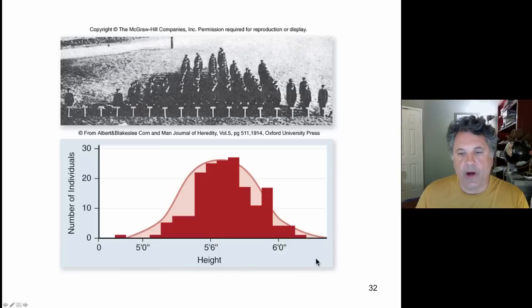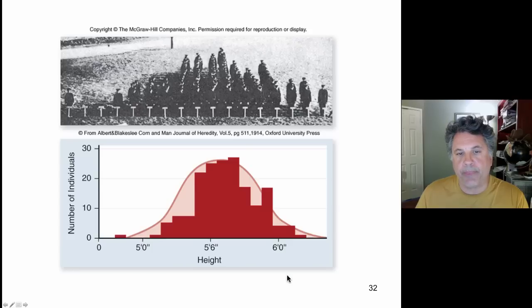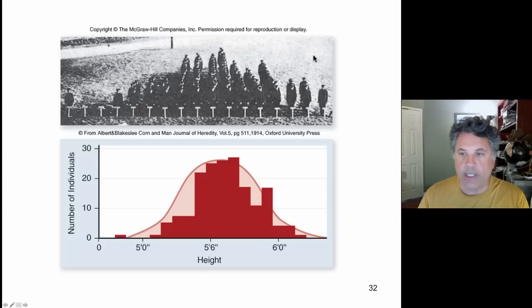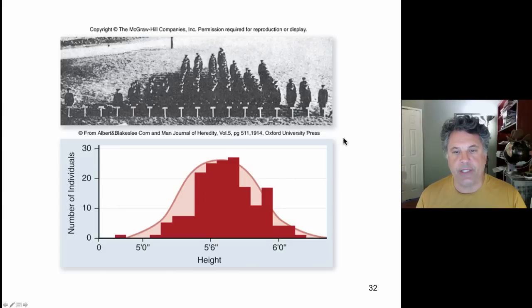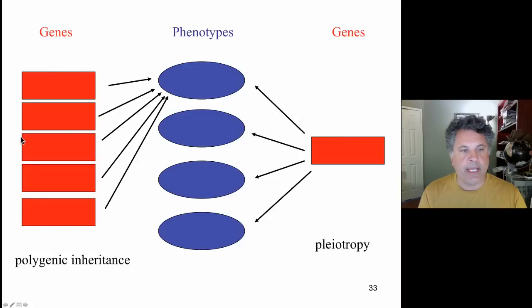In the case of height, what we're dealing with are many genes — polygenes — polygenic inheritance in other words — each allele of which can contribute in a quantitative way to the phenotype we are observing. This is often called inheritance of quantitative traits, and it is Mendelian. It just appears to not be Mendelian because there's continuous variation. So we might identify continuous variation as an apparent but not real exception to Mendelian inheritance, where many genes can contribute to a particular phenotype.